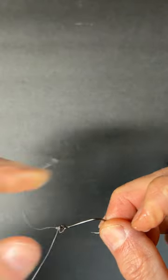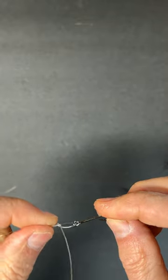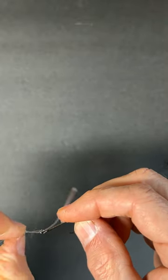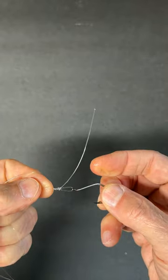Moisten, and then tighten it down. And there is your loop knot. And you can do this really fast when you're not filming it.